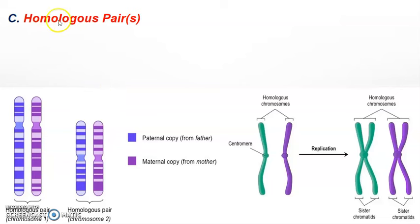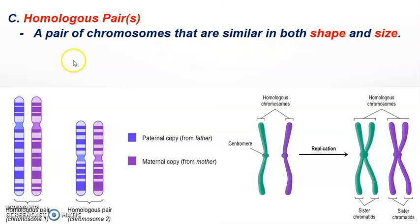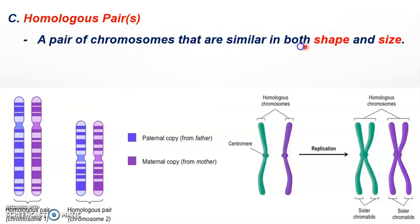One of our last vocab terms is a homologous pair. The prefix homo obviously means the same. A homologous pair refers to a pair of chromosomes that are both similar in shape, size, and length. Looking at the diagram, you can see how each pair matches up. The location of the centromere — this little indentation here — would always be in the same location. You wouldn't want to pair up a large chromosome with a small one because they will not have the same genetic information; they're not homologous.